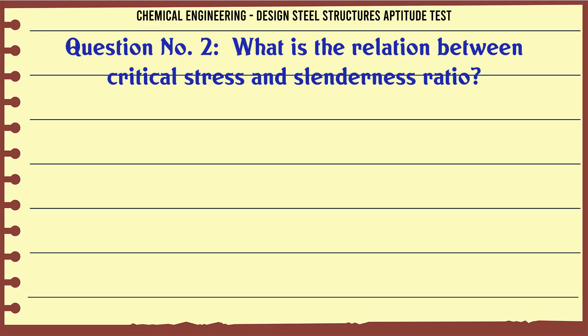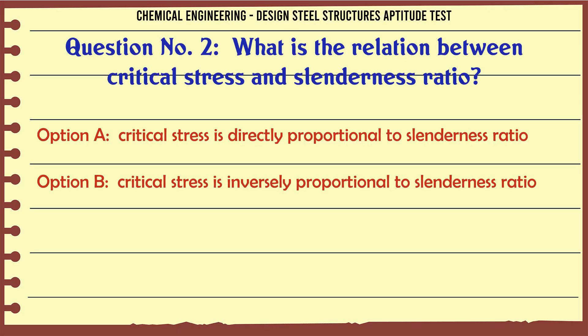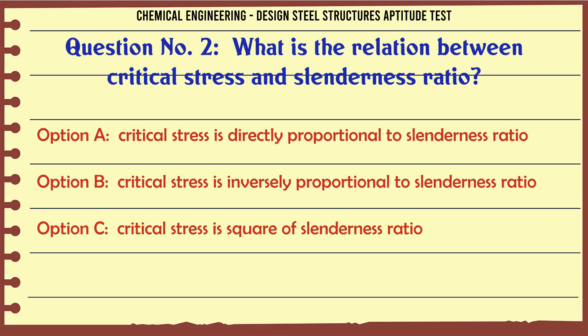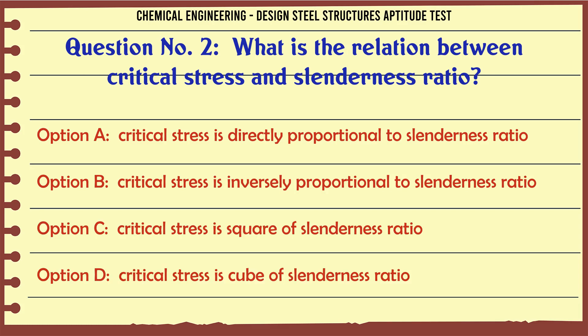What is the relation between critical stress and slenderness ratio? A. Critical stress is directly proportional to slenderness ratio. B. Critical stress is inversely proportional to slenderness ratio. C. Critical stress is square of slenderness ratio. D. Critical stress is cube of slenderness ratio.